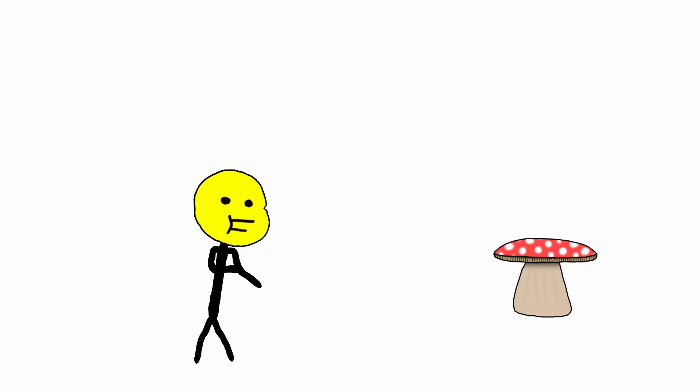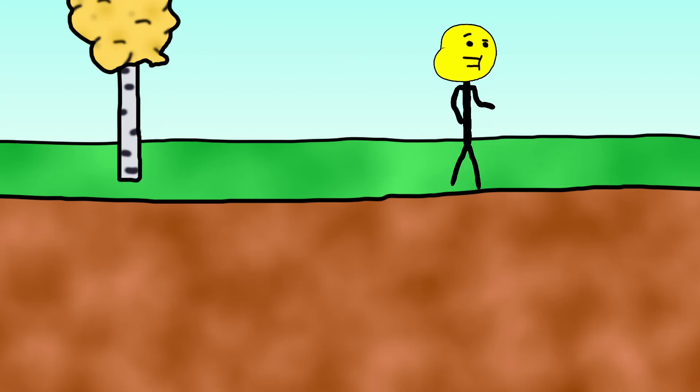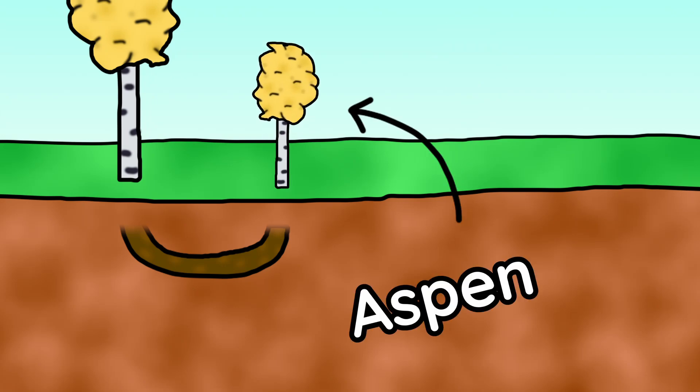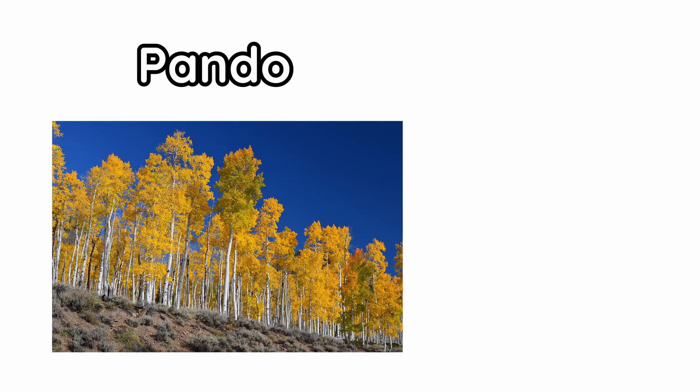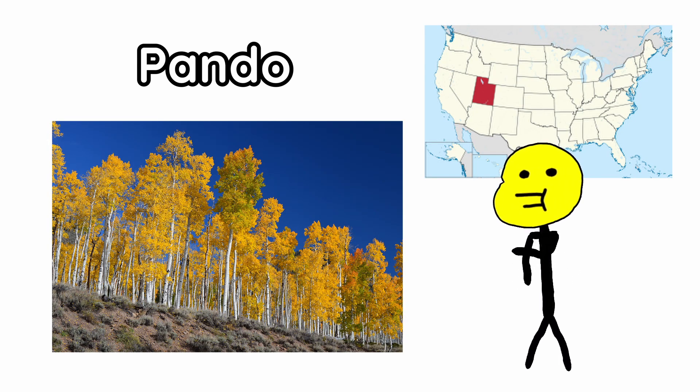Now, all of this was from a fungus UPS system as the middleman. But there's some trees that just shoot up a root and start growing a new tree there, like the aspen. One of them is called Pando, located in Utah, which seems like 47,000 different trees, but it's actually one big entity.